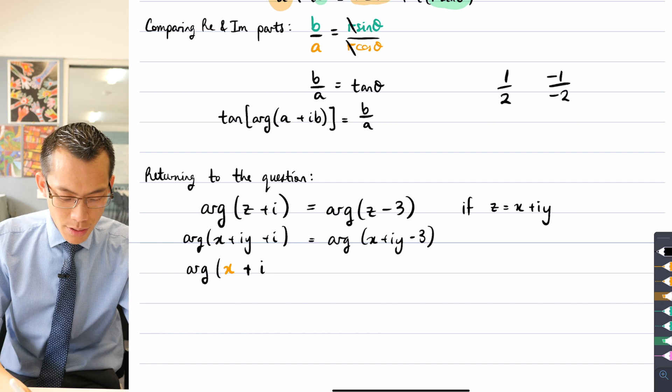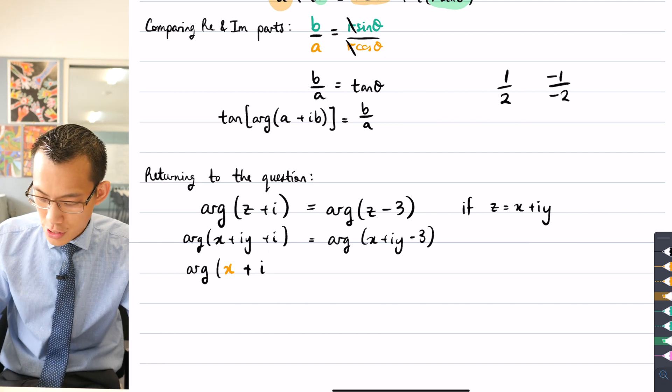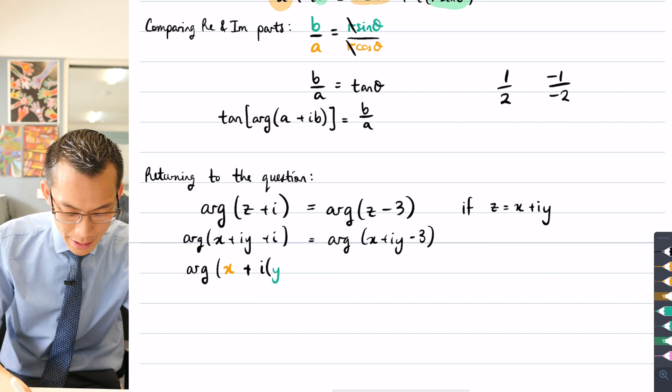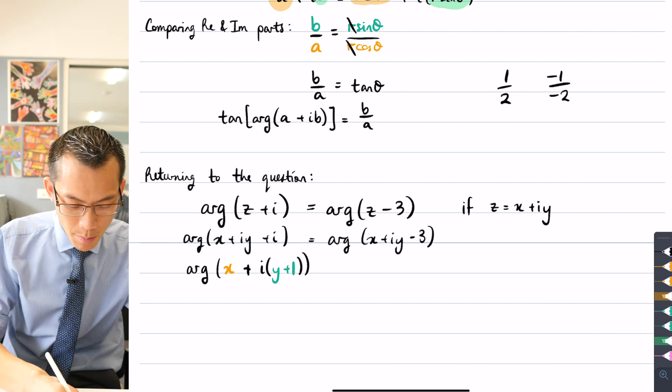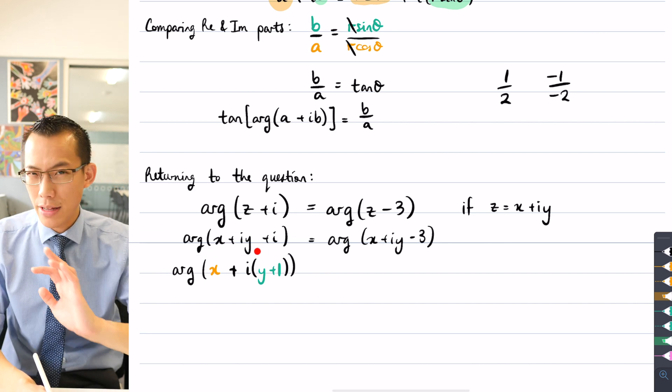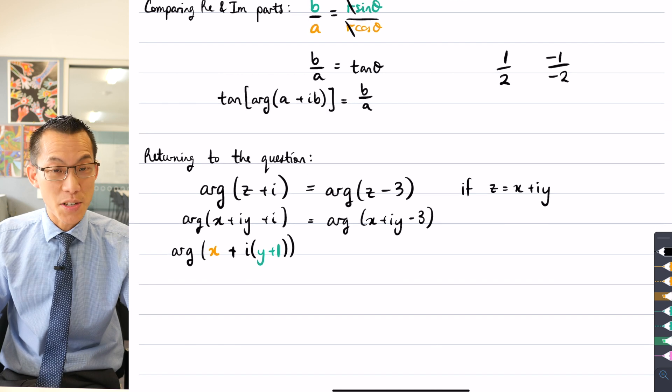And then here comes the imaginary part. Now I'll factor out an i, and when I factor out the i of this, what do I end up with? You can see you're going to have y lots of i and then one extra lot of i. So this is just rewriting this line above just to really separate out the real component and the imaginary component. So far so good.